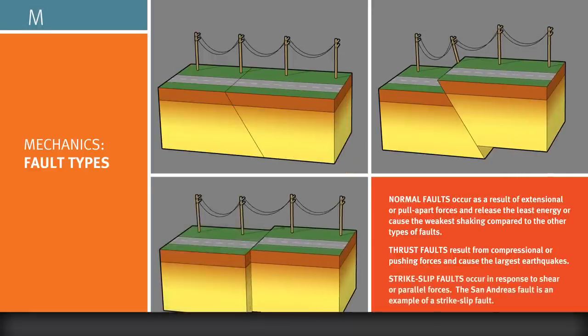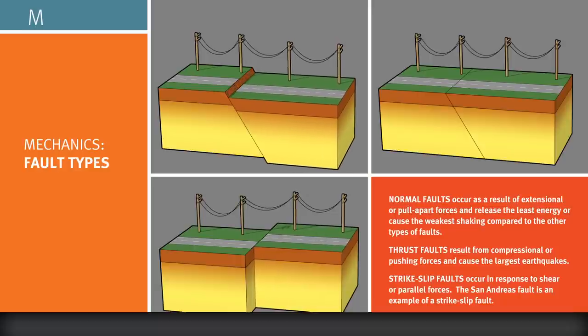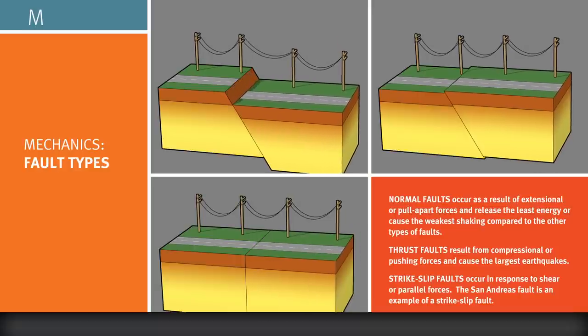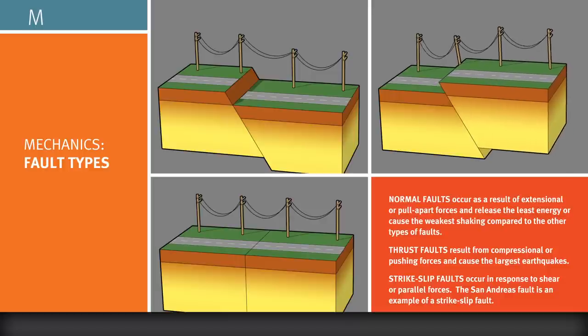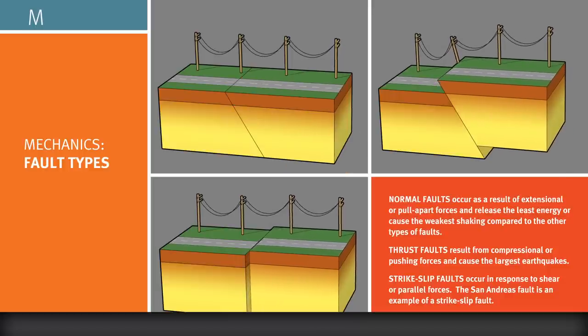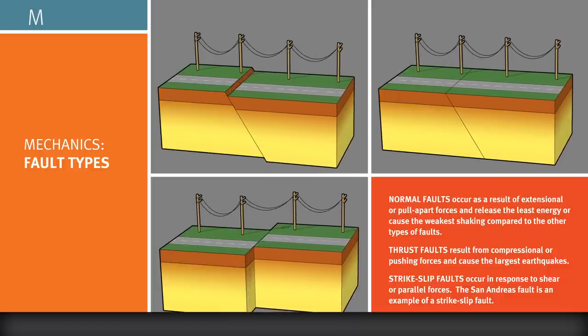Strike-slip faults are generally found in transform zones, where the tectonic plates slide horizontally past each other creating parallel shear forces. The San Andreas fault is an example of a strike-slip fault.